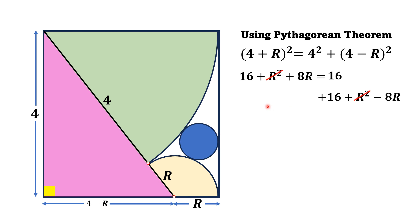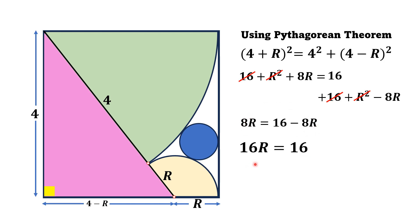4² is 16 and (4 − R)² is 16 + R² − 8R. R² cancels with R² and 16 cancels with 16, giving 8R = 16 − 8R. Taking 8R to the left gives 16R = 16, and dividing both sides by 16 gives R = 1. So we replace R with 1, and 4 minus 1 equals 3.